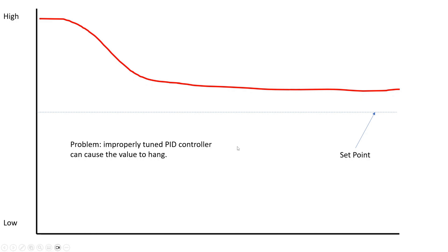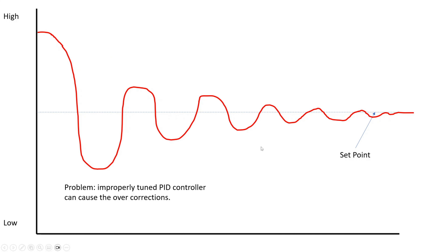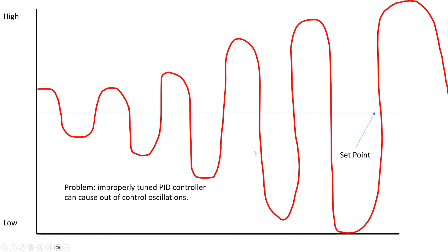When you go into your tuning and testing, you may see it gets close but then just sort of hangs — that's one example of an improperly tuned controller, and it indicates you need to be more aggressive on your P, I, or D terms. Another example is a series of under and overshoots that slowly correct back to the set point — not ideal, but better than wild out-of-control oscillations that are getting worse and worse over time, which we definitely want to avoid.